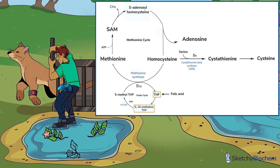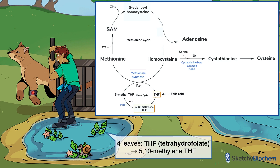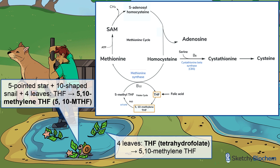There needs to be an abundant supply of 5-methyl-THF so we can continue making methionine from homocysteine. How do we regenerate 5-methyl-THF? Well, first we have to convert THF to 5,10-methylene-THF. To remember THF, just think of these four leaves floating in the pond. For 5,10-methylene-THF, look no further than the 5-pointed sea star, a 10-shaped sea snail, and four leaves.